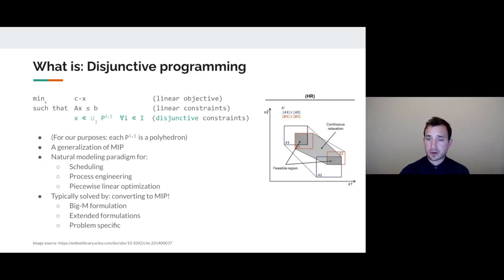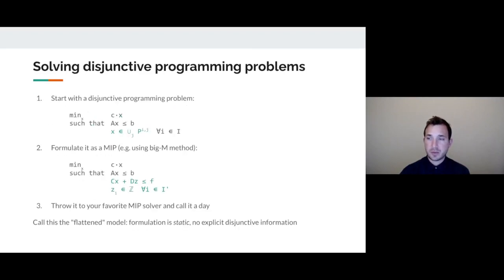You typically solve disjunctive programming problems by converting them to a MIP. There's generic techniques you can use, or you can try to take advantage of particular problem structure that you might have. Generally speaking, you start with your disjunctive programming problem, you look at each of those disjunctive constraints, and you build a mixed-integer programming formulation for it.